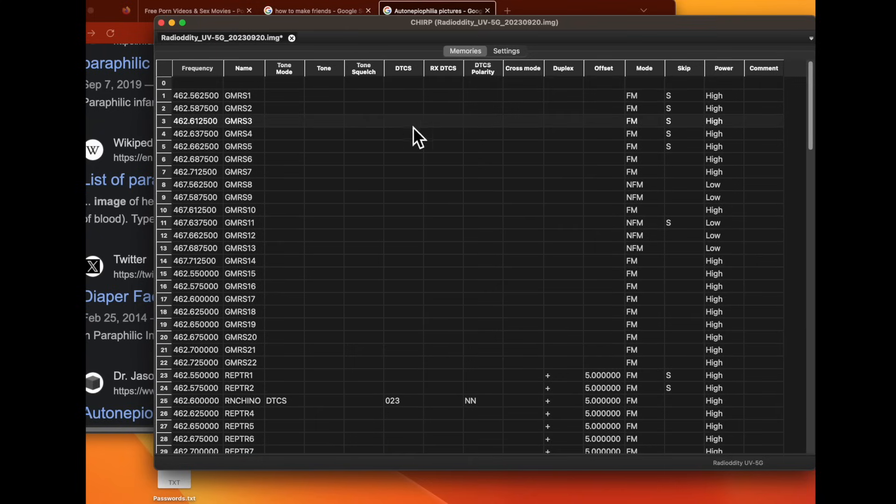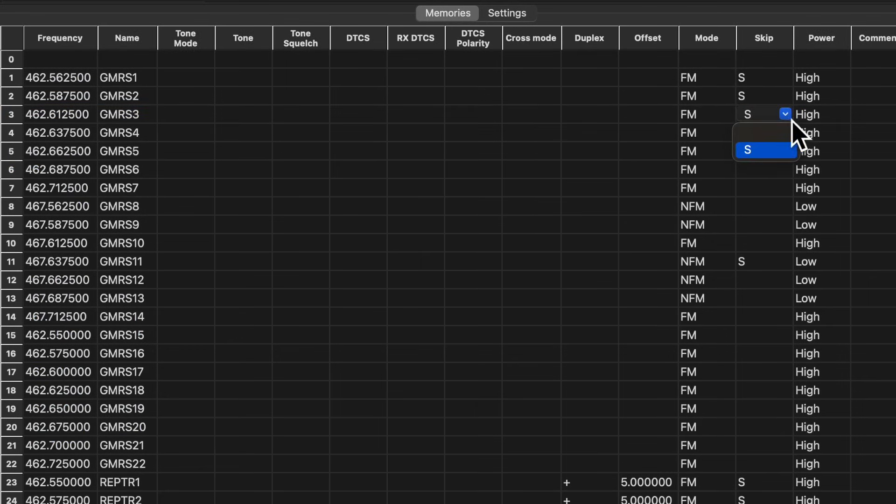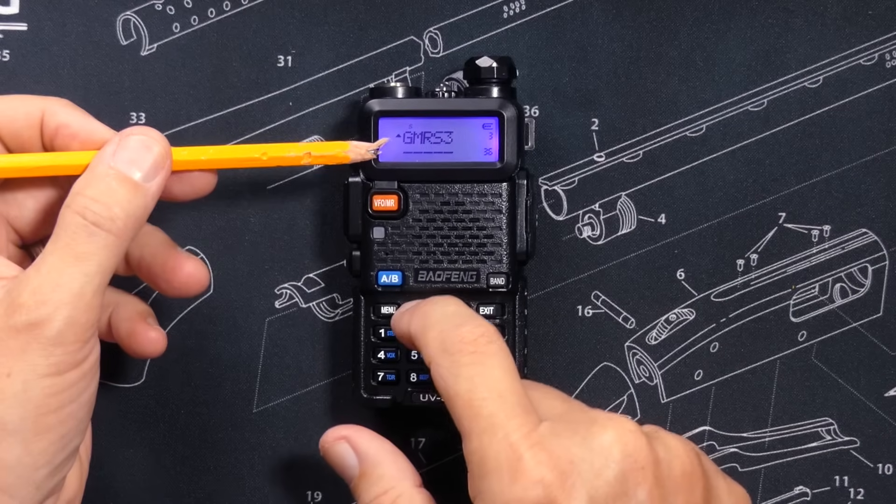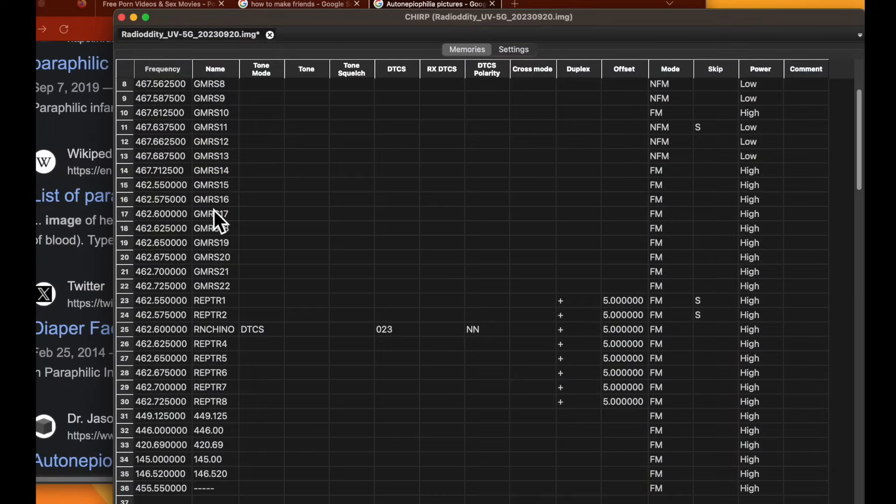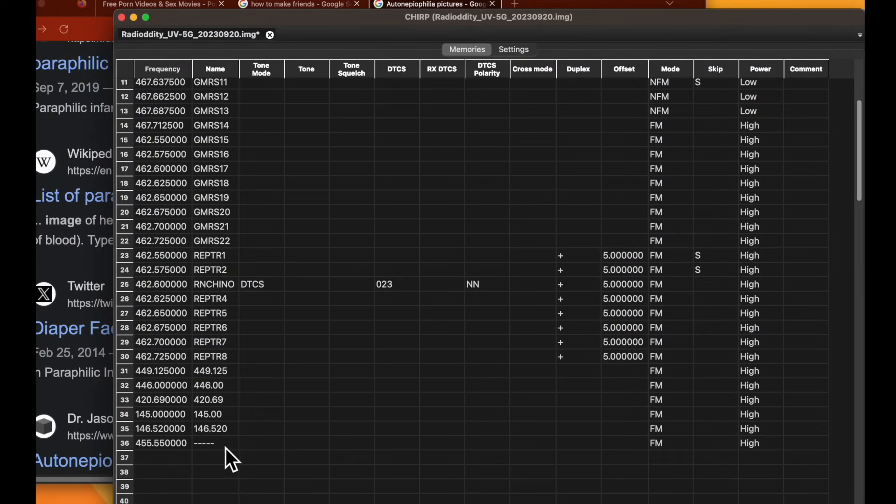In the Chirp software, there is a skip setting for each channel. Just enable that setting for the channels that you do not want to include in your scan. Also, if you are wondering how I got those names to show for my channels on the radio, that can also only be done in Chirp. You cannot enter channel names for channels directly onto the radio.